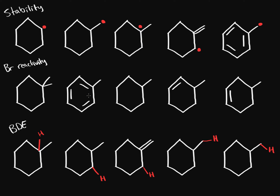What we're going to do is look at radical stability in multiple aspects. We're going to look at it directly through stability, through bromination reactivity, and through bond dissociation energy. Each of these is a ranking question — we're going to rank them by highest stability, highest bromination reactivity, and highest bond dissociation energy.